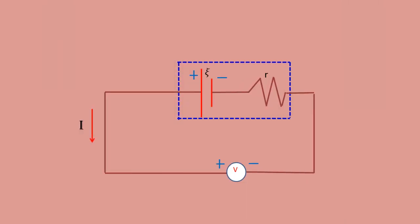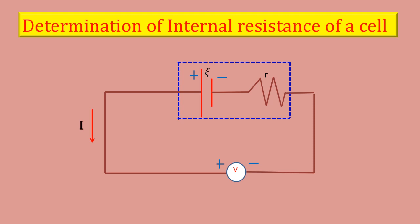How can we determine the internal resistance of a cell? The internal resistance of a cell could be determined by using a voltmeter. First, let us measure the EMF of a cell by connecting a high resistance voltmeter across it.